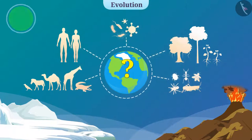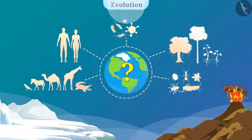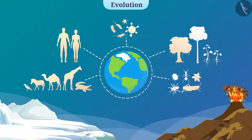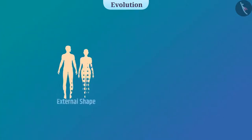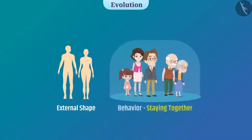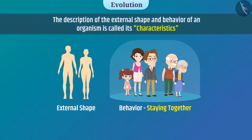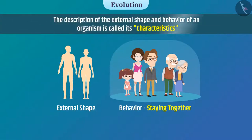We get the answer from the study of evolution. To find out how organisms have evolved, we need to know how different species originated over time. To understand this, we consider the external shape and behavior of organisms as the basis. The description of the external shape and behavior of an organism is called its characteristics.